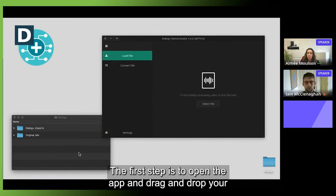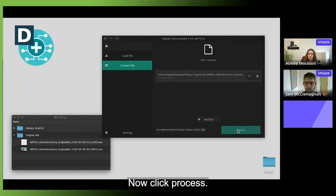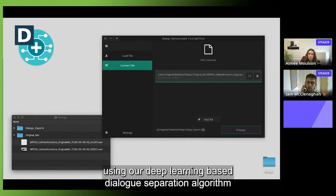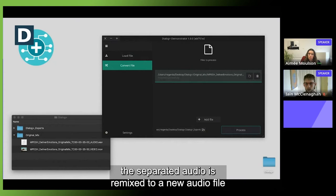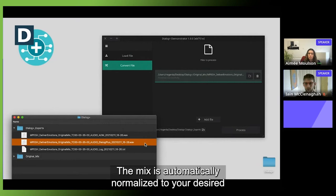In the next part of this video we will show you how to quickly create such a Dialogue Plus audio version. The first step is to open the app and drag and drop your audio file into it. The input format is a 48 kilohertz stereo wave file, 16 and 24 bit are supported. Now click process. The processing status is shown in a progress bar. First the dialogue is being separated from the rest of the mix using our deep learning based dialogue separation algorithm. In a second processing step the separated audio is remixed to a new audio file with cleaner dialogue.